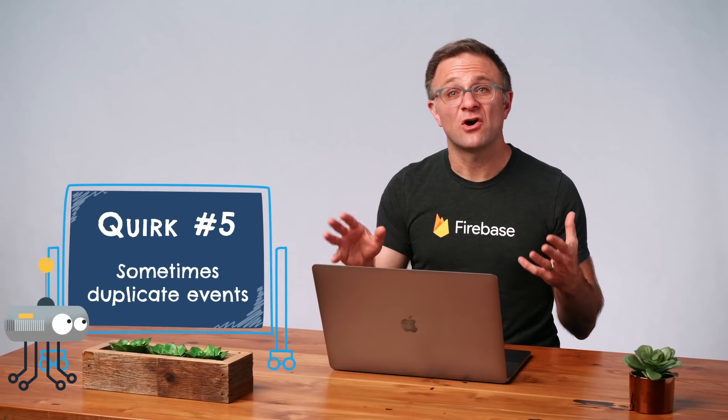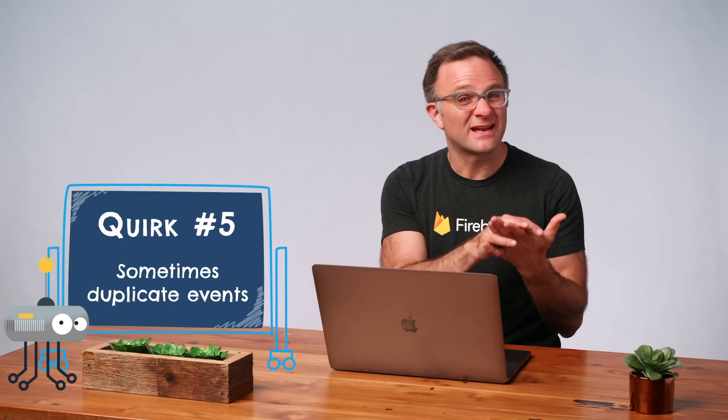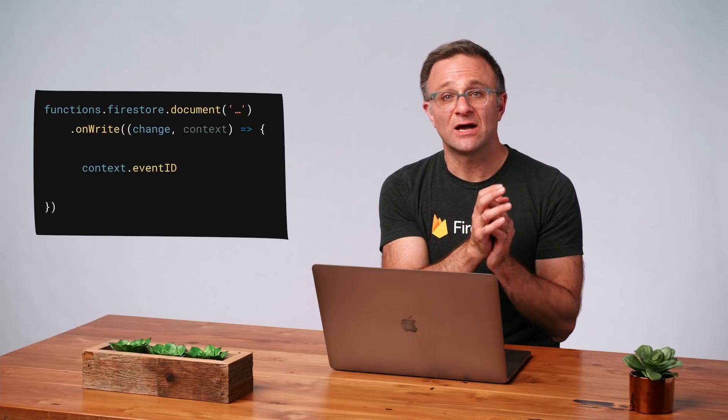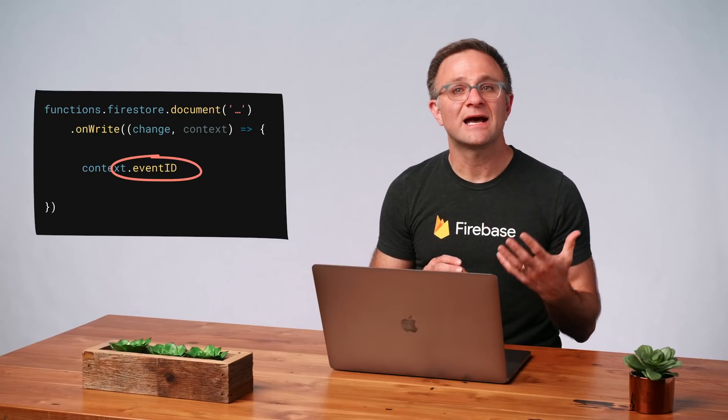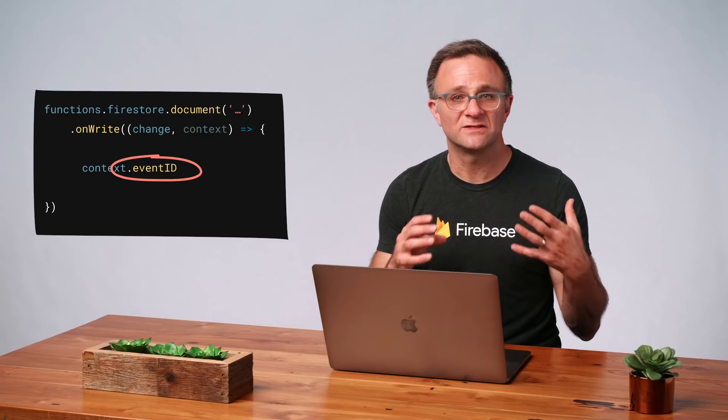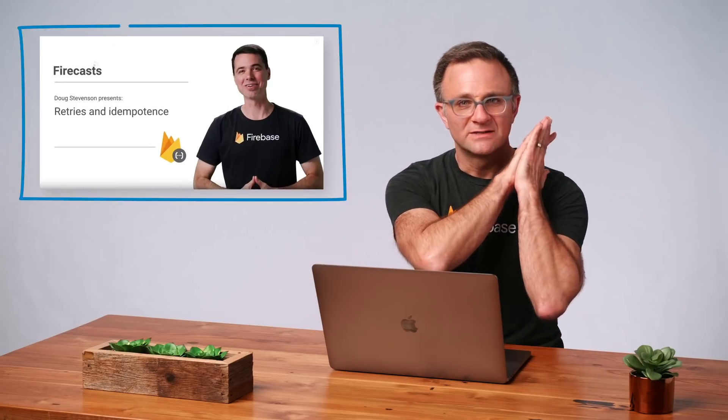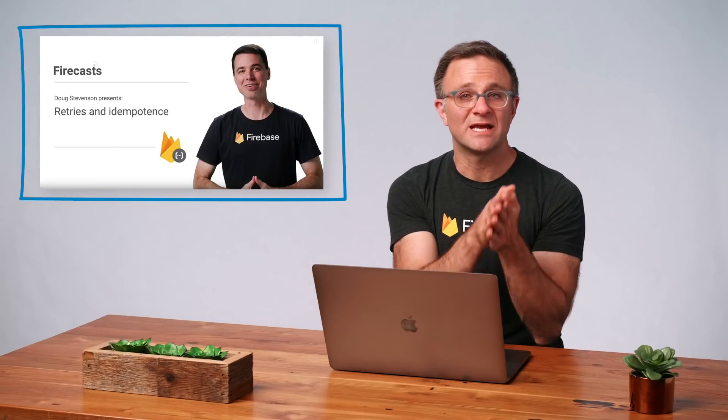Quirk number five: functions sometimes can be called more than once for the same event. It's not something that happens often, but it does happen, and you need to make sure something catastrophic doesn't occur in those cases. One thing that does help is the event ID property — a unique identifier sent as part of the context parameter with each event. If a function does get triggered twice, each of those instances will have the same event ID. Some services, like the Stripe Payment API, let you pass an idempotency key — essentially a unique identifier — along with every call to make sure that a user doesn't get charged twice. This would be a great situation to use the event ID. Duplicate functions and idempotency are big enough topics that I can't fully cover them here, so check out Doug's series or the Cloud Functions documentation if you want to find out more.